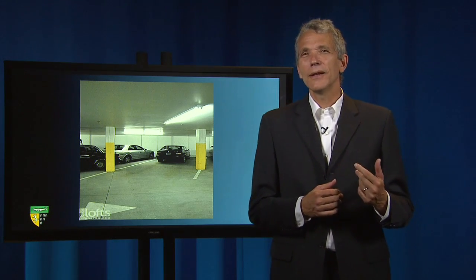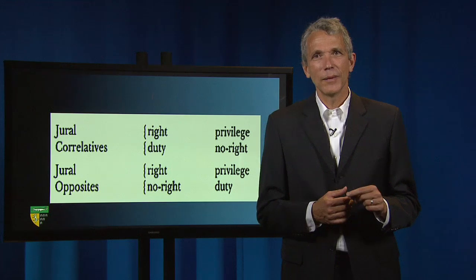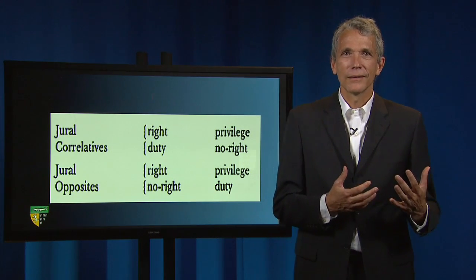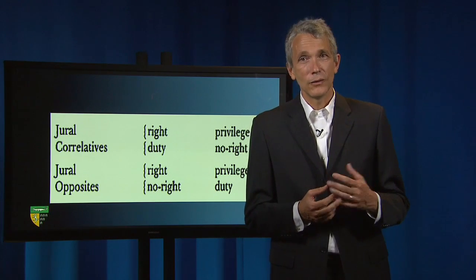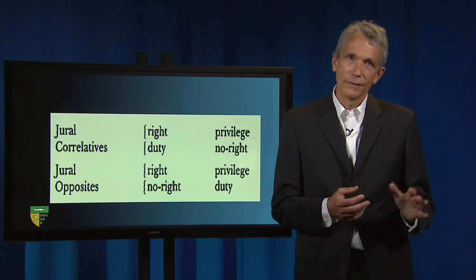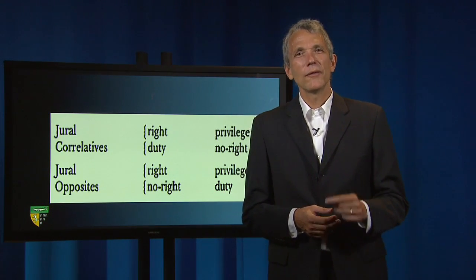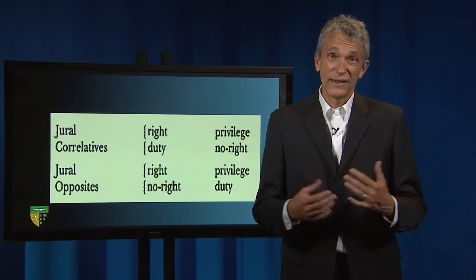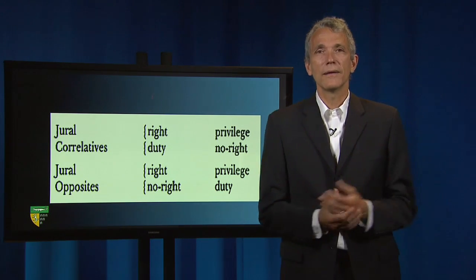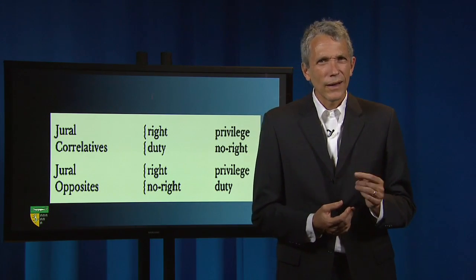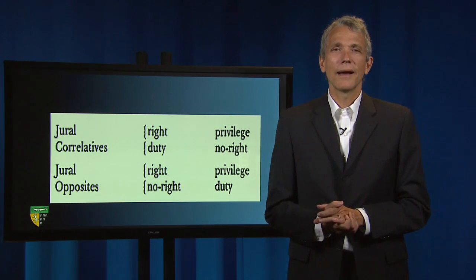Thus, when I have a Hohfeldian right, I have a right to enjoy the object of that entitlement — parking in space X — in a way that involves your having a corresponding duty: your duty not to park in parking space X. By contrast, when I have a Hohfeldian privilege, I have the privilege to enjoy or attempt to enjoy the object of that entitlement — parking in space X — but without your having a corresponding duty; you have no duty to refrain from parking in that space.